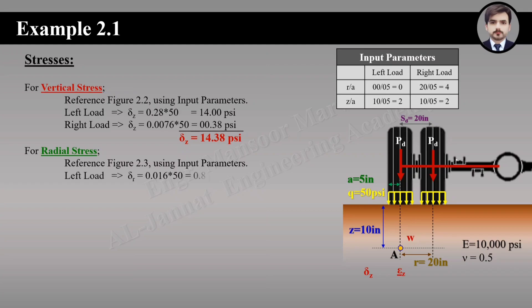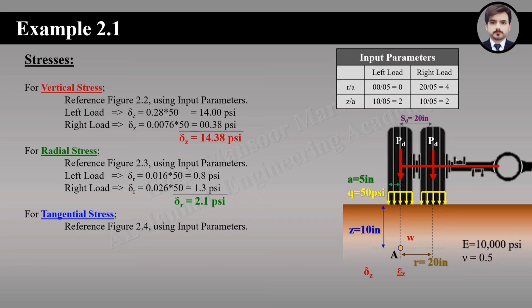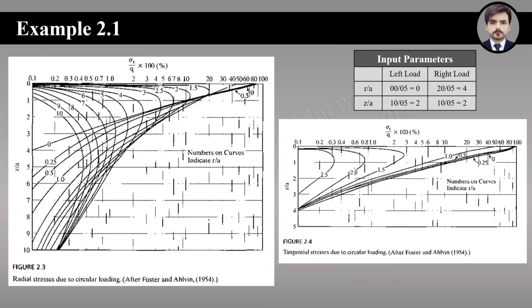For radial stress, the reference figure is 2.3, and the combined radial stress at point A is 2.1 psi. For tangential stress, the reference figure is 2.4, giving a combined tangential stress of 0.8 psi. However, the right load contribution to tangential stress is taken as zero because Figure 2.4 has an upper limit of R/A = 2.5, and our right load has R/A = 4, which exceeds that limit.